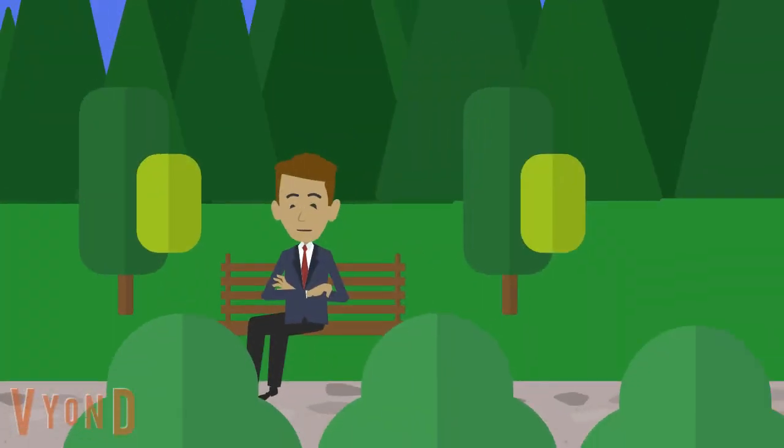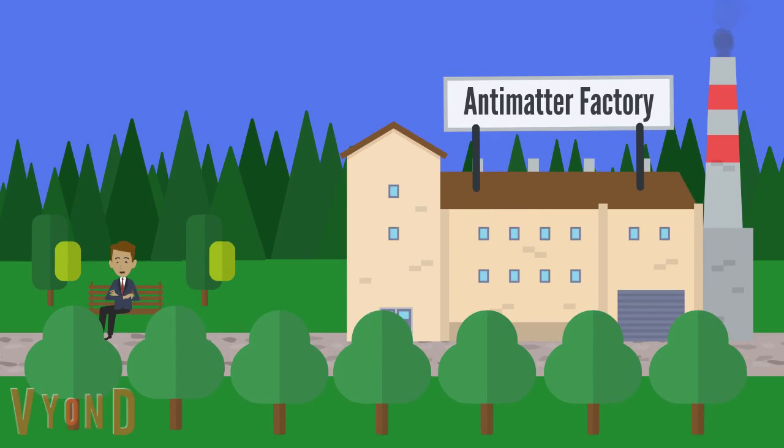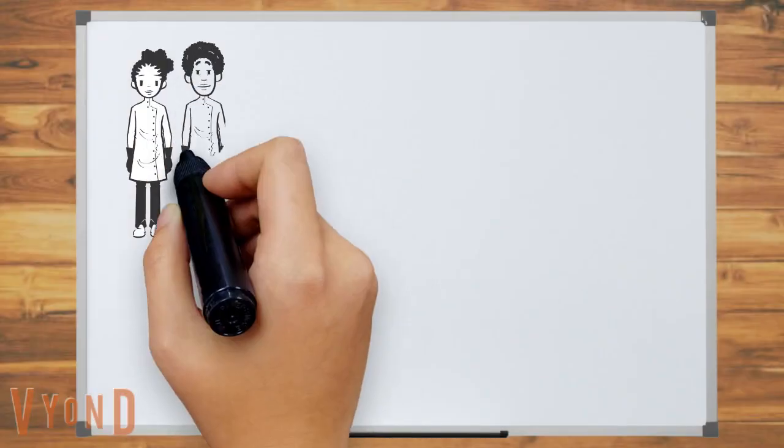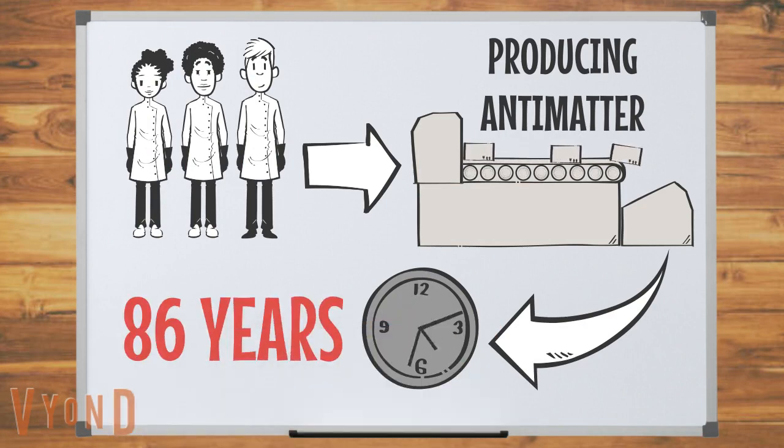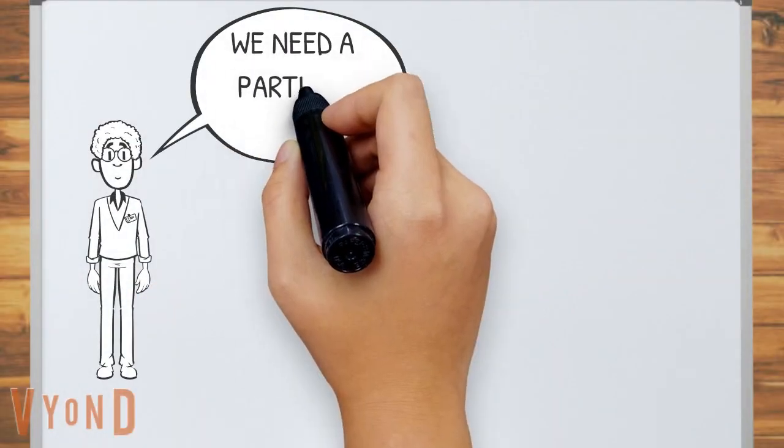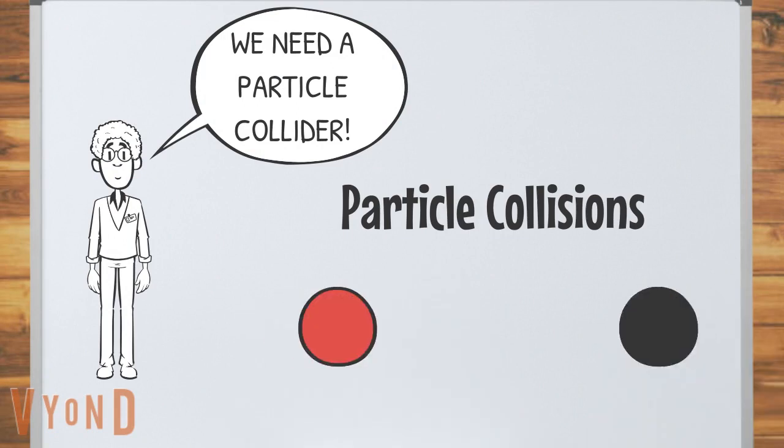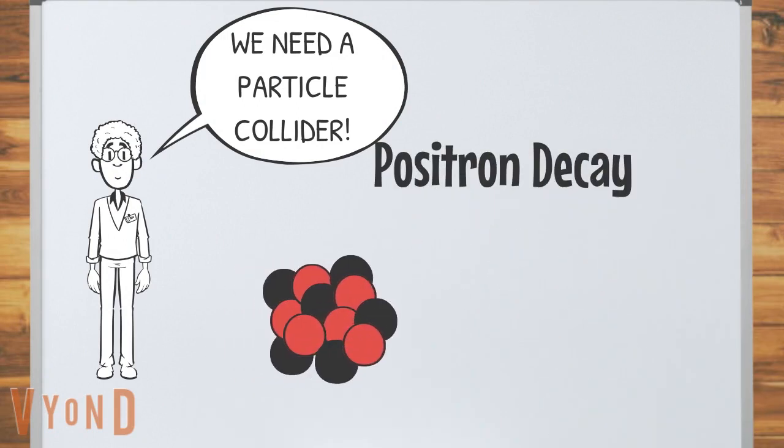Oh, and I forgot to mention, we're already making it. Scientists have been making antimatter for over 86 years. Physicists constantly produce antimatter from high-energy particle collisions and other experiments.